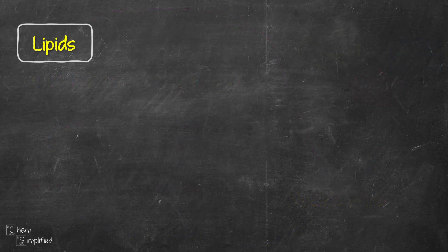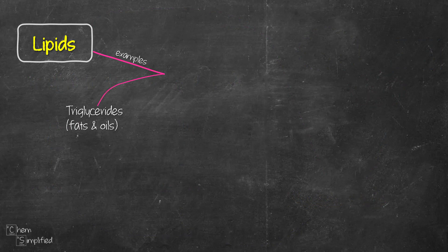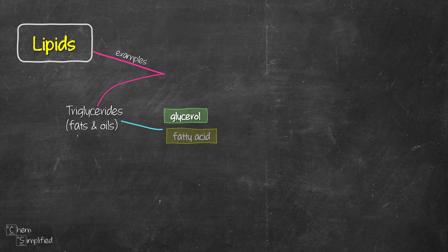The fourth biomolecule are lipids. There are many types of lipids, and the most common ones are triglycerides, or more commonly known as fats and oils, and they are made out of glycerol and fatty acids.